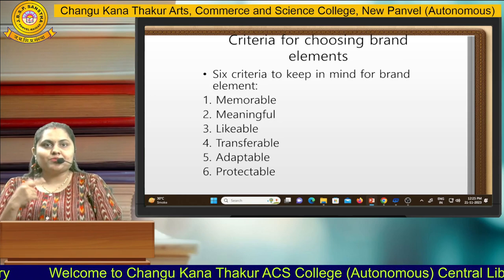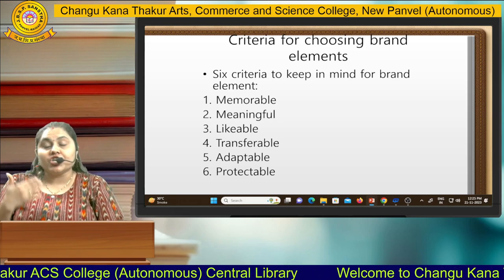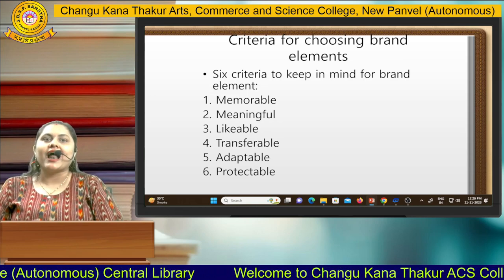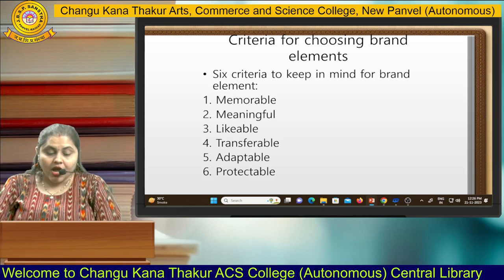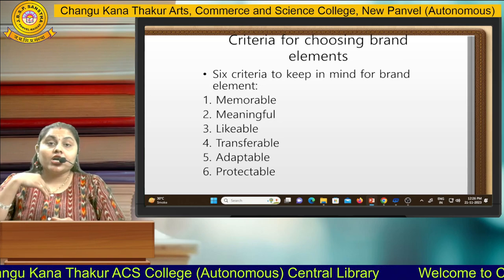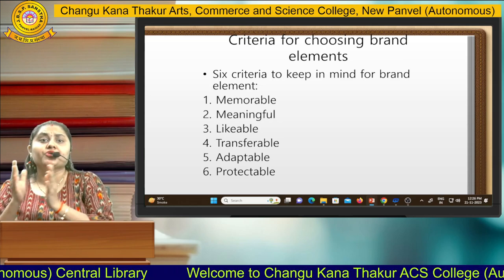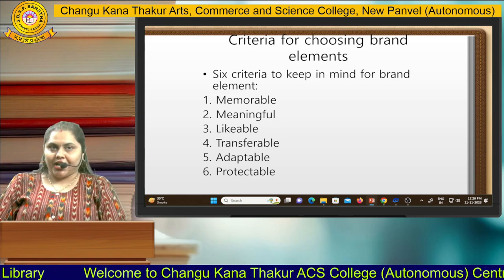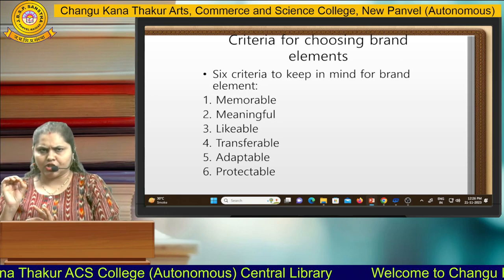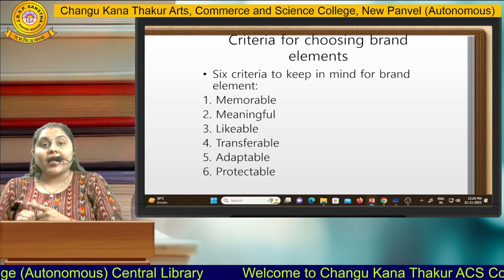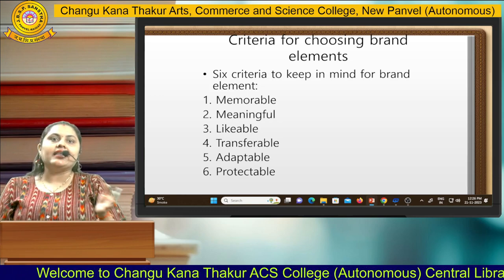The next criterion is adaptable. As per the changing times, you have to evolve — evolution is the only constant. These changes can be brought about if your brand name stands the test of time, so it needs to be adaptable to the changing scenario. The last criterion is that it should be protectable — your brand name will stay protected against everything. It cannot be touched, hampered, or utilized by somebody else. So these are the six things to keep in mind: your brand name needs to be memorable, meaningful, likable, transferable, adaptable to changing times and consumer behavior, and protectable against any kind of storm you may face.